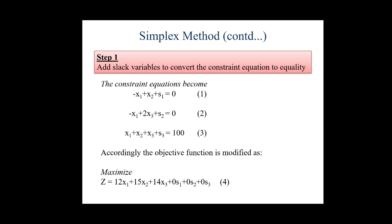So step 1 says that we have to remove the inequalities from our constraint equations and bring the equality sign there. So how can we proceed for this? For this we have to introduce a variable known as slack variable - s1, s2, and s3 which you can see in equations 1, 2, and 3.